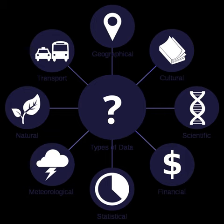Data, information, knowledge, and wisdom are closely related concepts, but each has its own role and meaning. According to a common view, data is collected and analyzed, and only becomes information suitable for making decisions once it has been analyzed in some fashion. The extent to which a set of data is informative depends on how unexpected it is to a person. The amount of information content in a data stream may be characterized by its Shannon entropy.